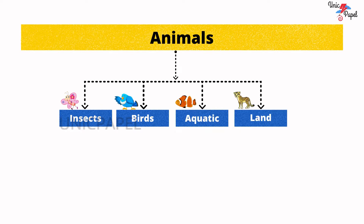Insects. Insects can be categorized into 2: six-legged insects and eight-legged arachnids.